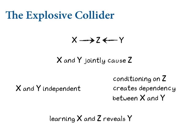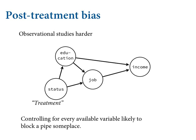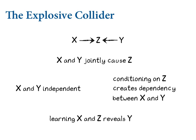A student asks: in the pipe situation, isn't it the case that you'd be misrepresenting X and Y by not conditioning on Z? Let's come back to this — there's a denouement coming where I try to tie all this together. We're going to do something called the backdoor criterion that puts all this together.